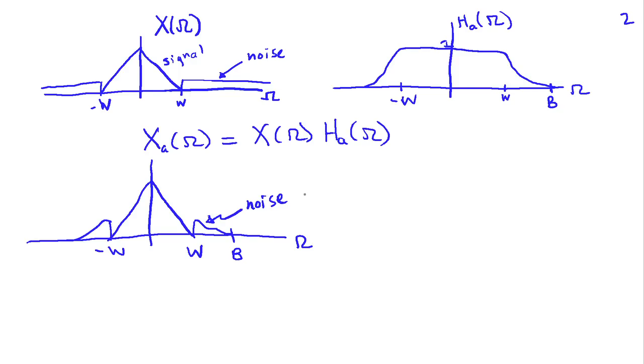Now if I directly apply the sampling theorem to this particular input signal XA of T, we see that the highest frequency present is B. So I would require my sampling frequency omega S, which of course is 2 pi over T, would have to be greater than 2B. That's what the sampling theorem would say. And this would guarantee no aliasing at all.